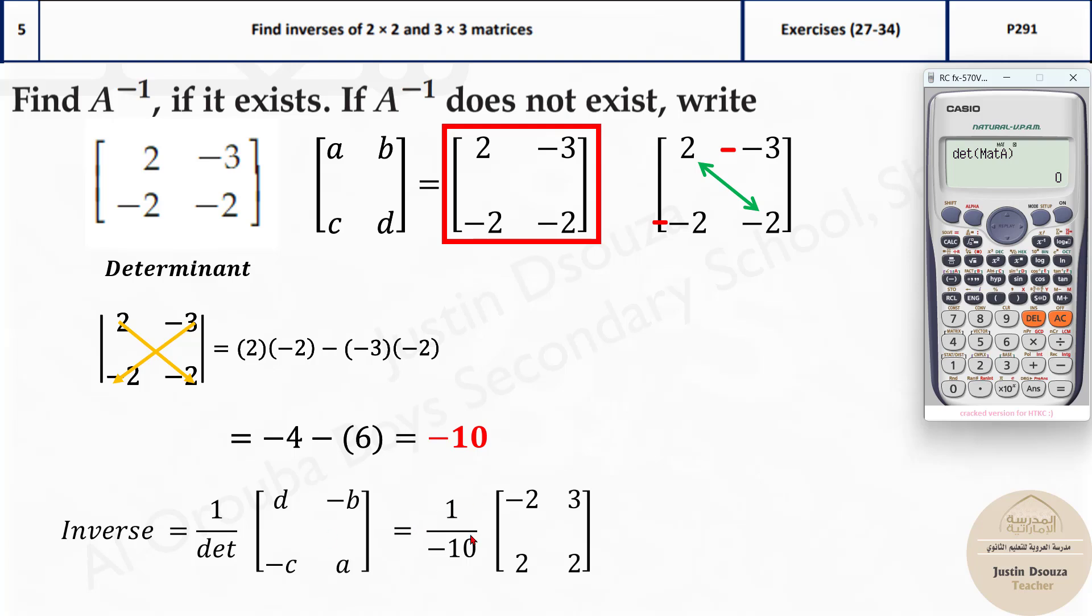And then you just write 1 by determinant is minus 10. And initially, we had minus 2D. It became A and A became D. And here, you multiply both by minus. This is the answer. You can multiply the negative 1 by 10 inside. And you will get these answers. This is the determinant. You can check this.